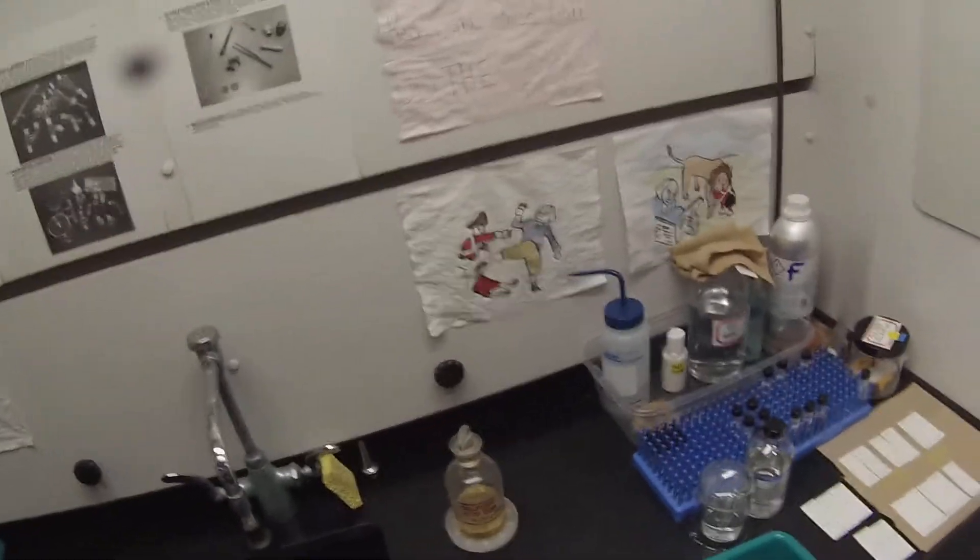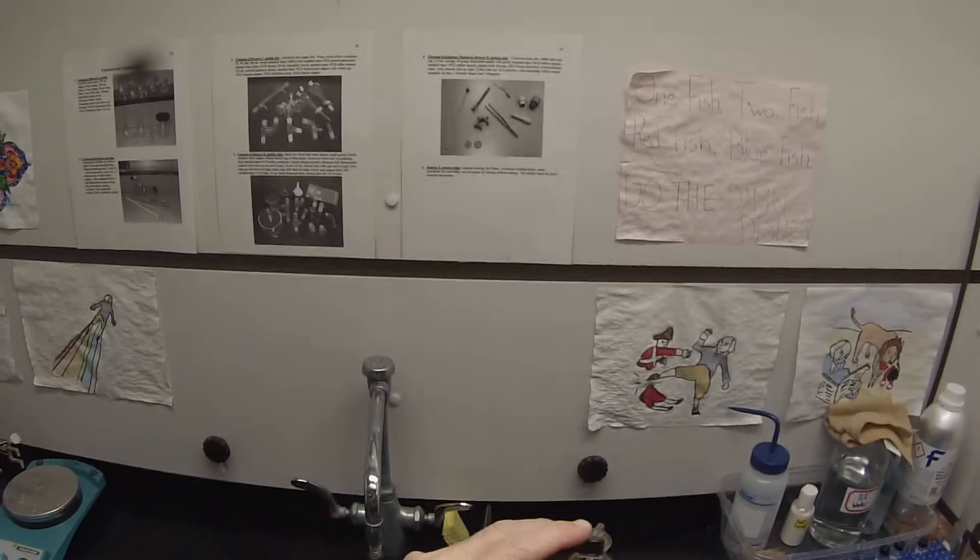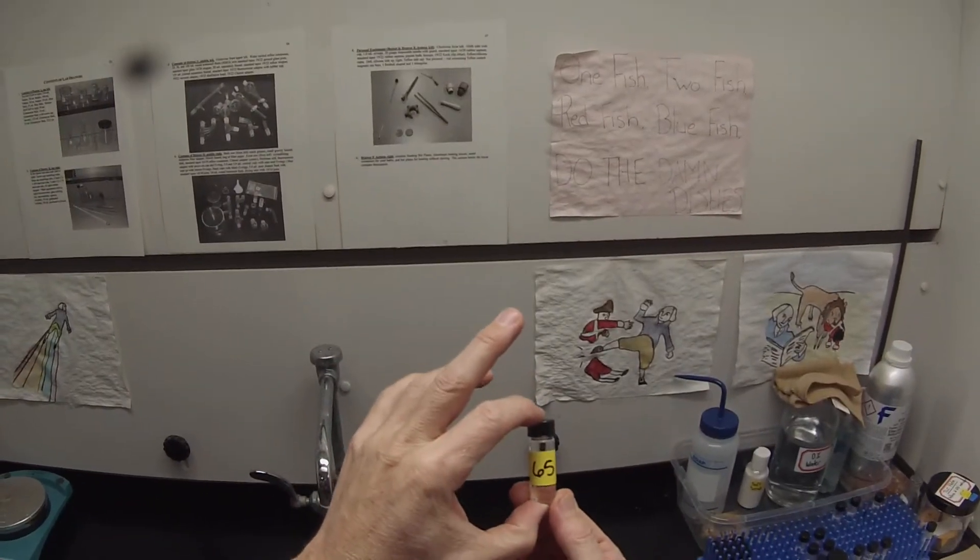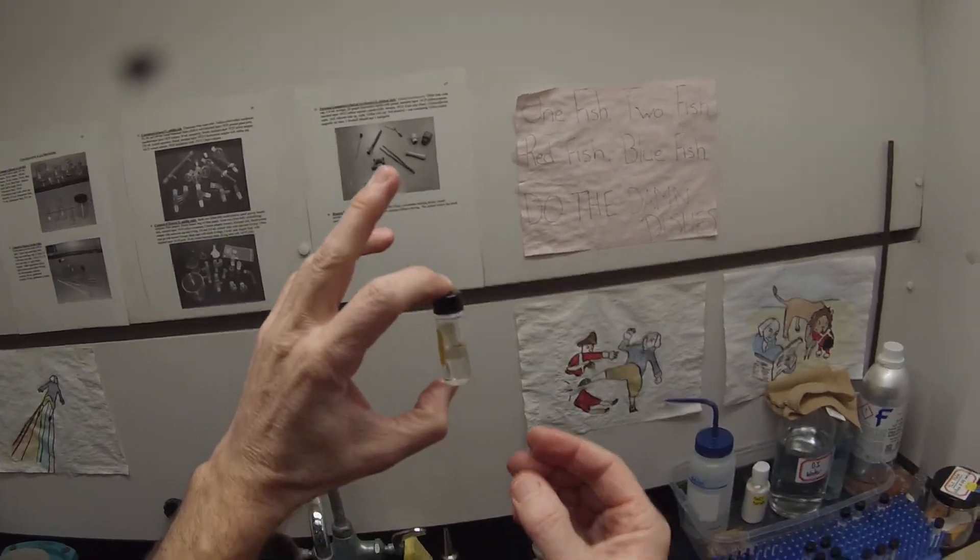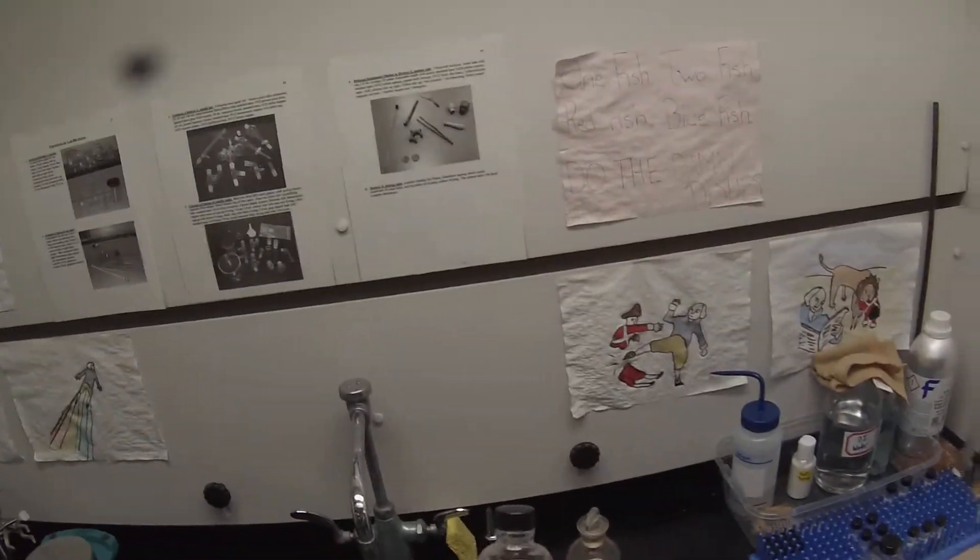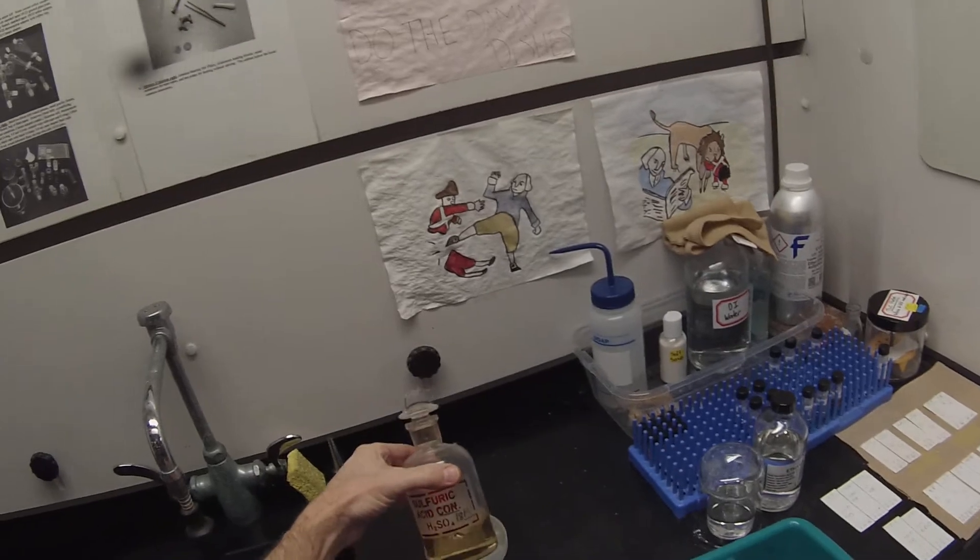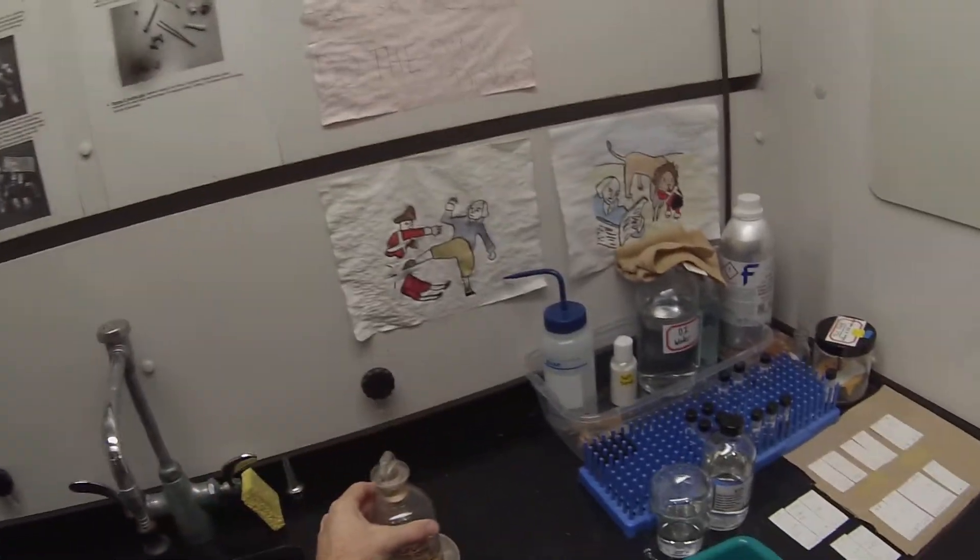So today we're going to be setting up the acetylation of an unknown alcohol lab. We have our unknown alcohol number 65 here, probably about 2 milliliters, and some glacial acetic acid, and a bottle of concentrated 18 molar sulfuric acid.